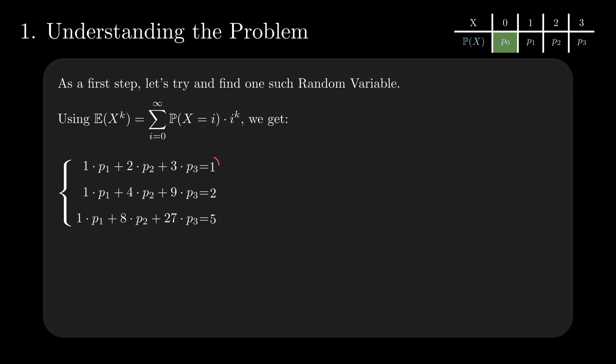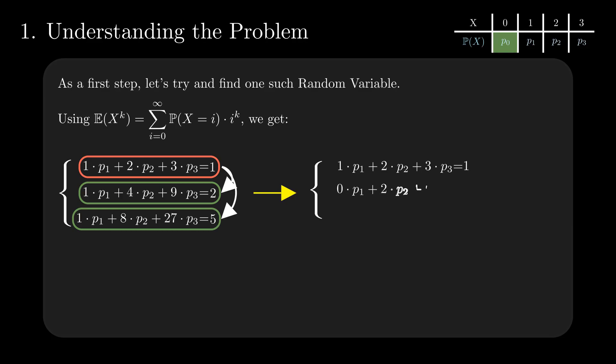The first way to solve it is to simplify it by reducing p1 from the second and third equations. We achieve this by doing two subtractions. At this point, you can eliminate p2 by subtracting three times the second line from the third.